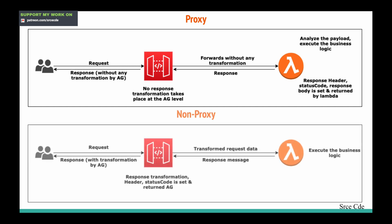Now let's have a look at the non-proxy integration flow, also known as custom integration. The end user invokes the API endpoint with some request data, and now the API Gateway is able to transform the request data. API Gateway will decide how it wants to transform the data based on the mapping templates that we have defined. Once that request data is transformed, it will forward that transformed data to the Lambda function.